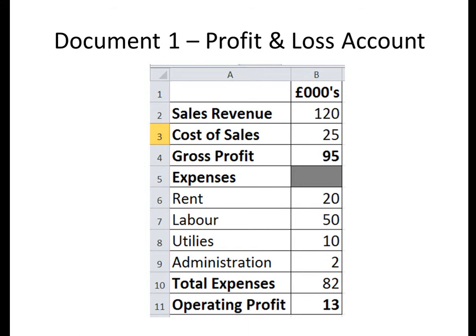Expenses is another word for fixed costs. In this example we've got Rent, Labour, Utilities and Administration. Utilities include gas, electricity and water. Administration would be things like accountancy costs. We add all those together to get total expenses of £82,000. To get our Operating Profit, we take the total expenses away from the gross profit — so £95,000 take away £82,000 gives us an Operating Profit of £13,000.